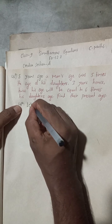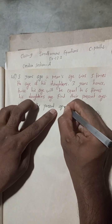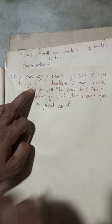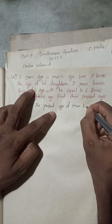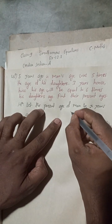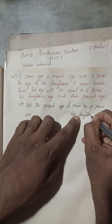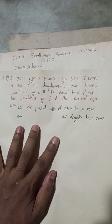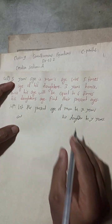Solution: Let the present age of the man be x years, and the present age of his daughter be y years.